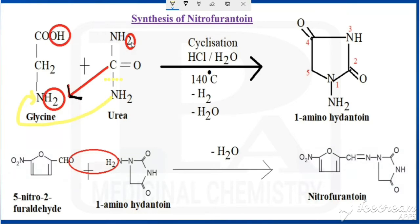From the acid end, OH is removed and combines with H from NH₂, being removed as water. From the glycine amino group, H₂ is also removed. So there is removal of one molecule of water and one H₂. It undergoes cyclization in the presence of HCl or water at 140 degrees centigrade. Here the bond between carbon and nitrogen would be broken, and to satisfy the valency of that carbon, it has to unite with the nitrogen. Since two hydrogens have already been removed from the nitrogen, one bond connects with the carbon.